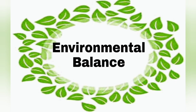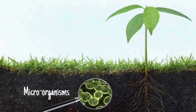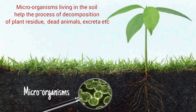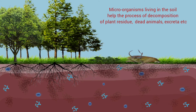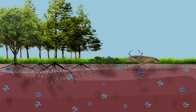Now let's see our last topic — environmental balance. There are many food chains in our environment. Food is very essential for living things, so the food chain goes on continuously. Microorganisms living in the soil help the process of decomposition of plant residue, dead animals, excreta and waste material. Mitti ke andar paye jaane wale microorganisms yani sukshmajiv, sukhe patte, praniyon ka mrit shareer tatha unke malamutra jaise padarton ko sadane ka kaam karte hai, aur is prakriya ko decomposition kehte hai.